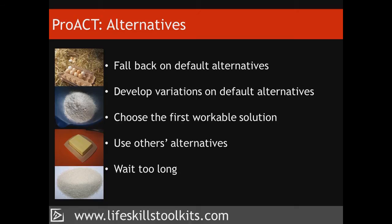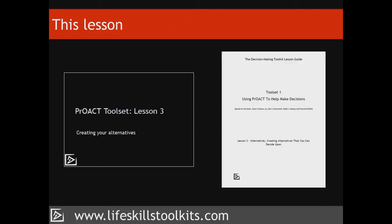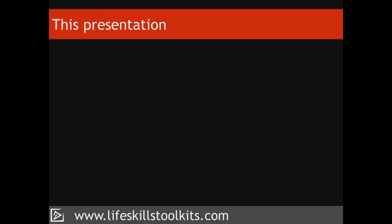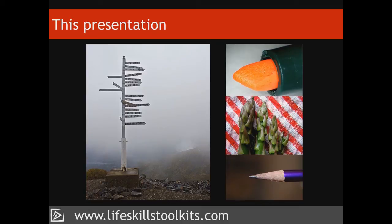A decision is only as good as the alternatives from which we make our choice. And yet, it may sound strange, we often think that our decision will turn out better than the alternatives we've identified. This lesson consists of this presentation and a lesson guide. We'll describe six ways to create alternatives based on the decision objectives identified in lesson two, plus three tips to guide you through this step.